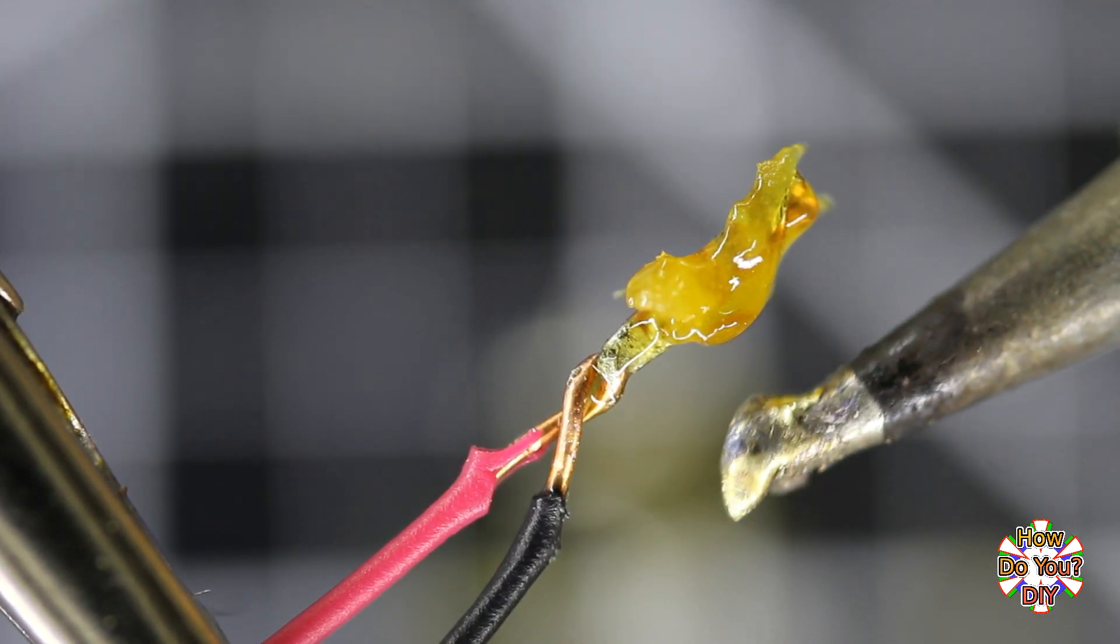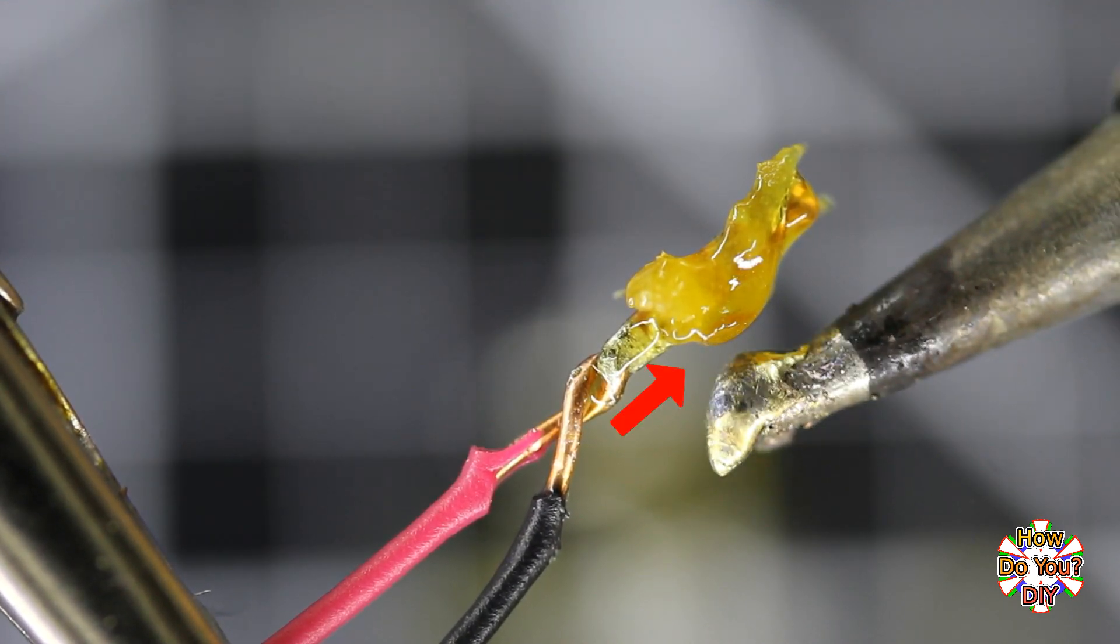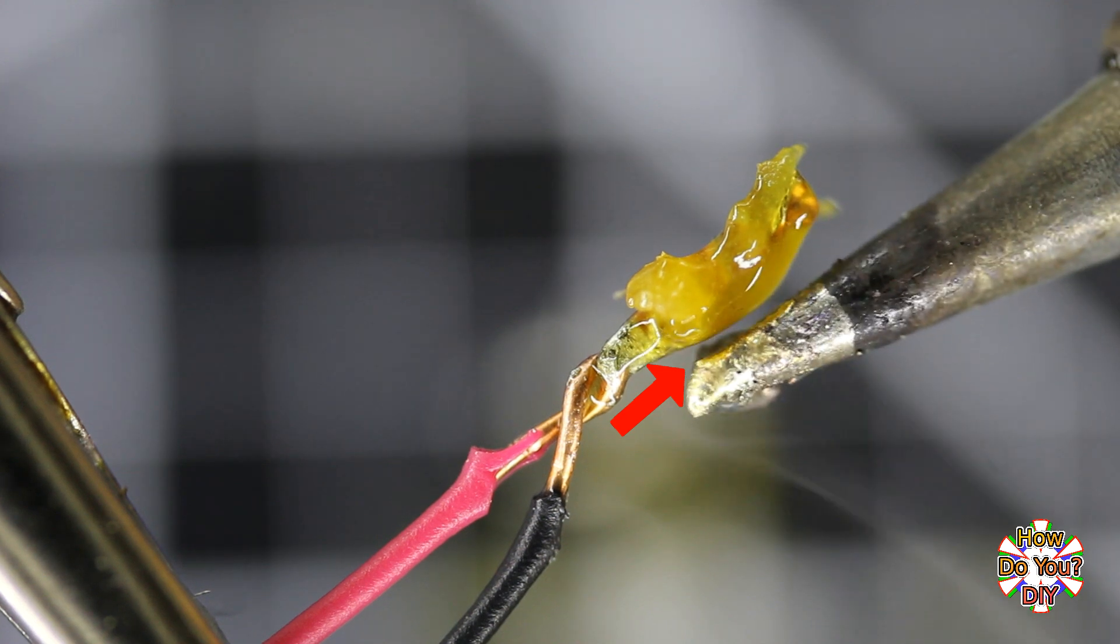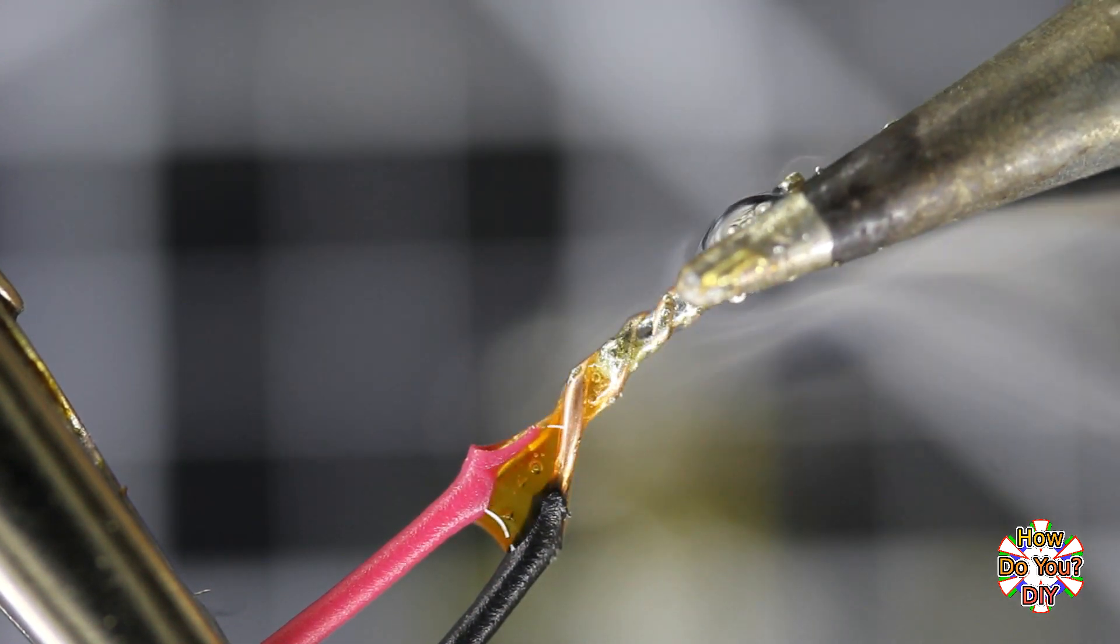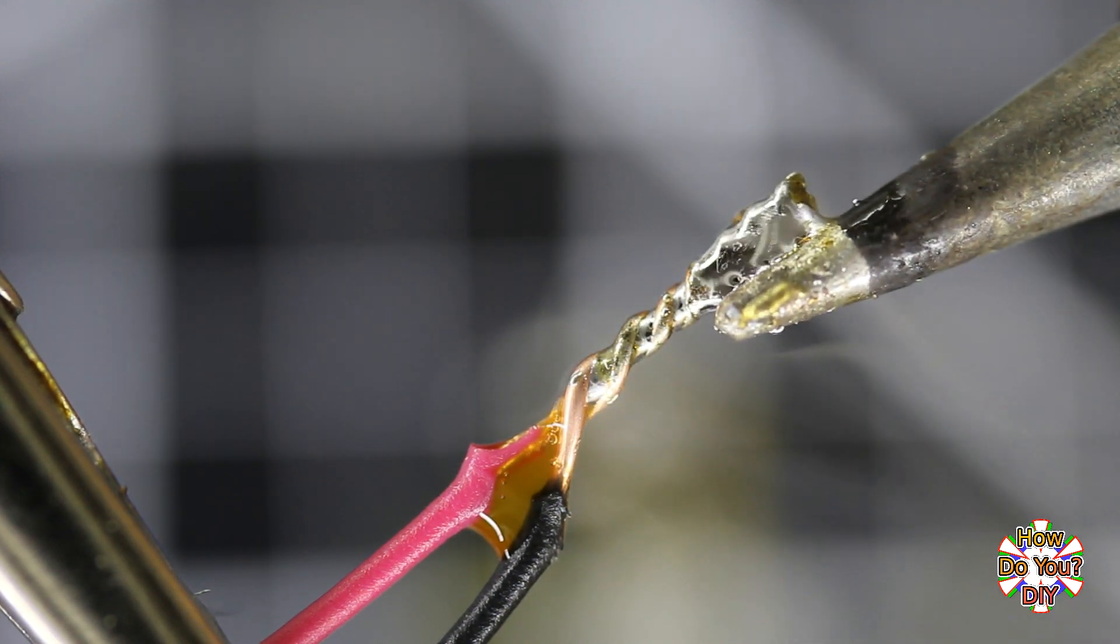Watch the solder on the iron as it comes into contact with the flux. It's like that solder skin is just melting away. The solder gets shiny and behaves completely different when it touches the wires.